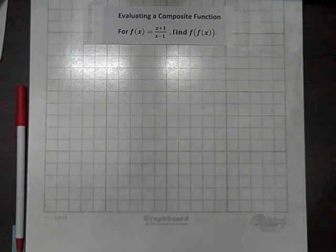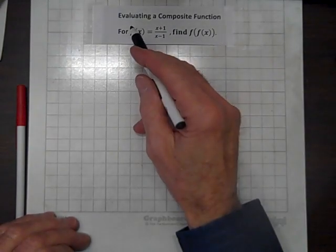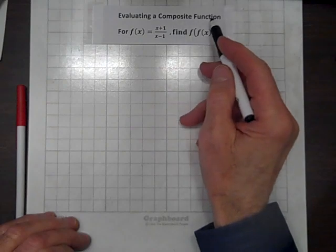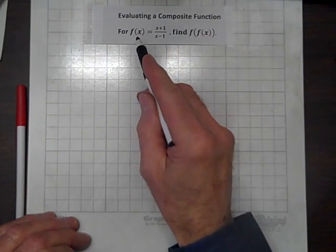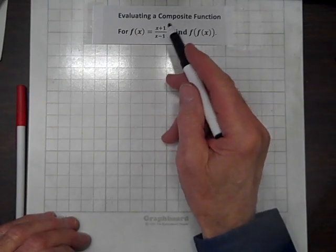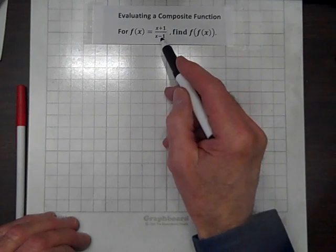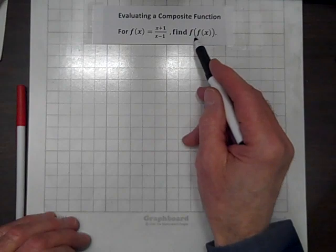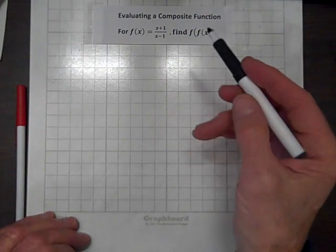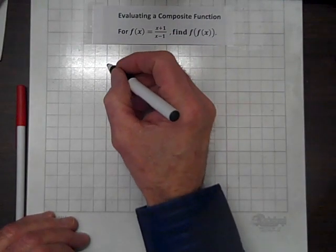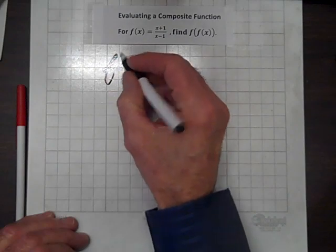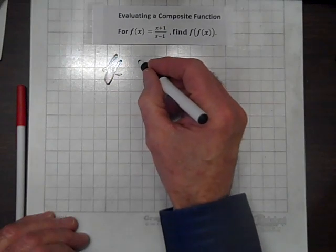Our task is to evaluate a composite function. For f of x equals the quotient of x plus 1 over x minus 1, we have to find the composite function f of f of x. So we'll start out by replacing every x